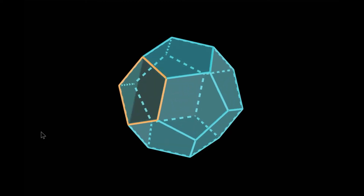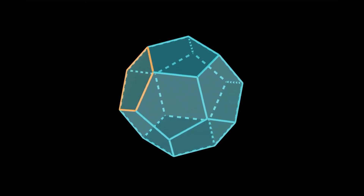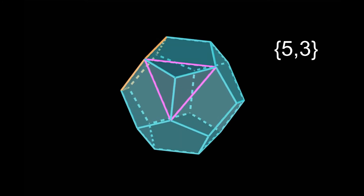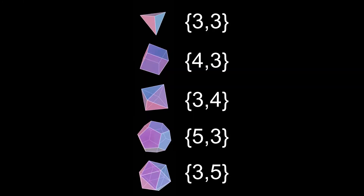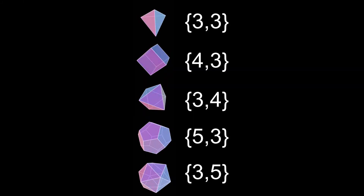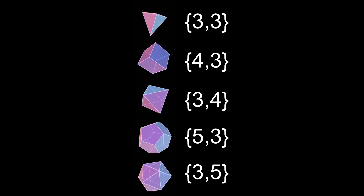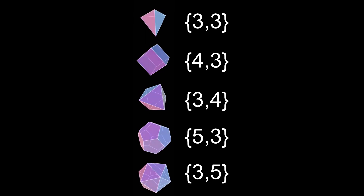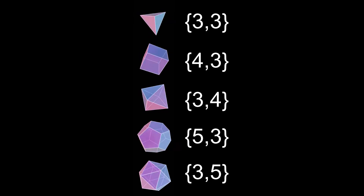So the second number of the Schläfli symbol of a cube is 3. Take another regular polyhedron, the dodecahedron. It has pentagons as faces, and the adjacent vertices of a particular vertex form a triangle, so its Schläfli symbol is {5, 3}. And here are the Schläfli symbols of all the platonic solids. This will be important to deriving the general formula later.